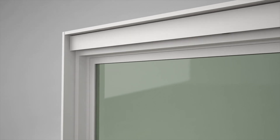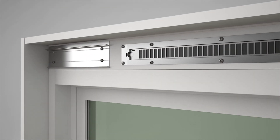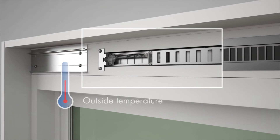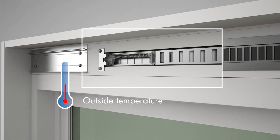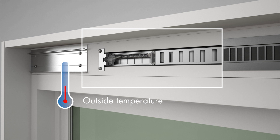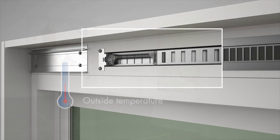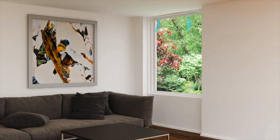The AWS Trickle Vent is activated by a bi-metal shape alloy spring, precision calibrated to Australian temperatures and conditions, that expands and contracts as the outside temperature changes. No manual control or mains power is required.